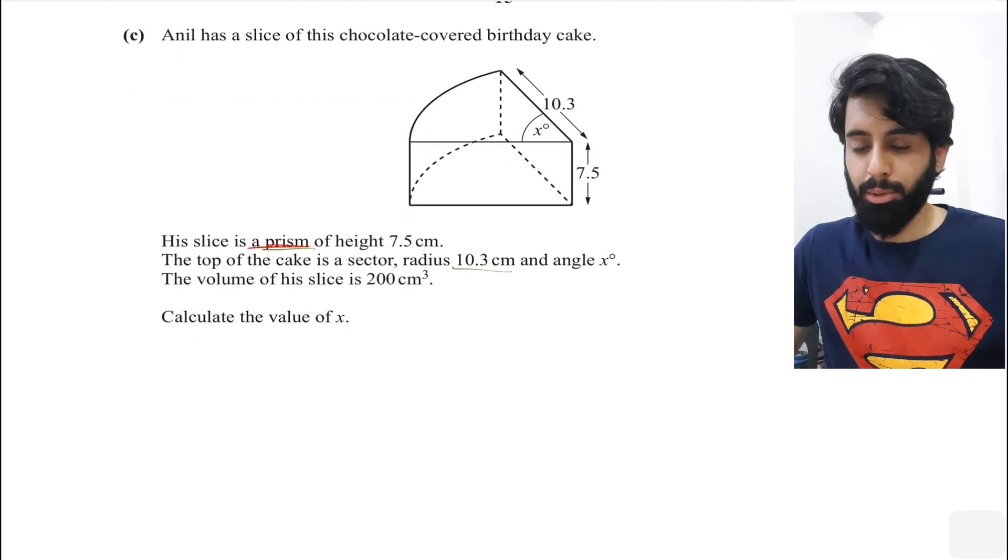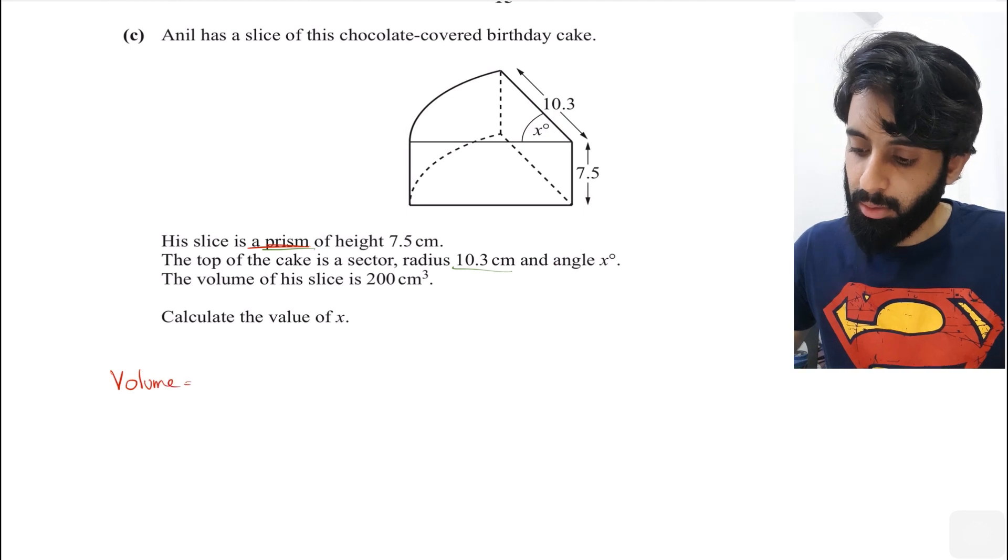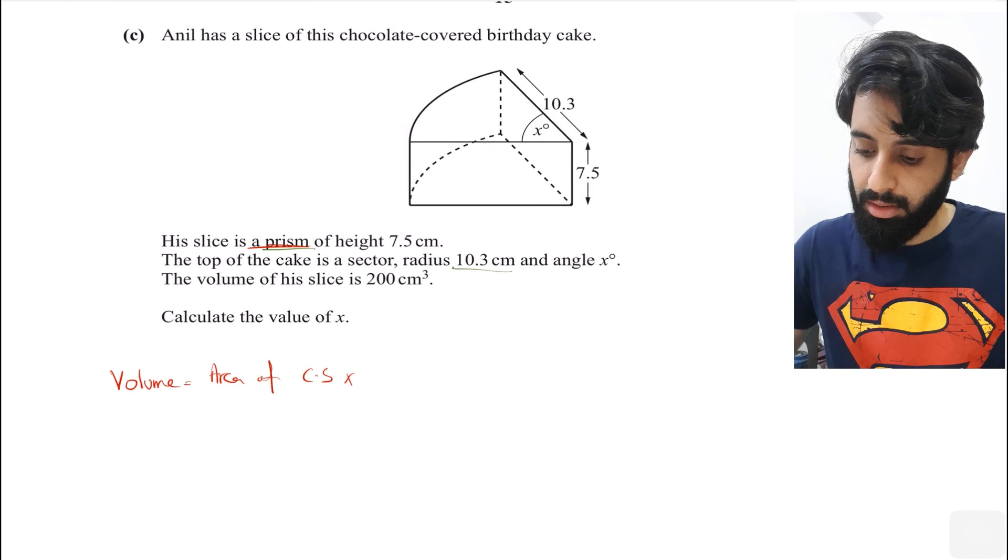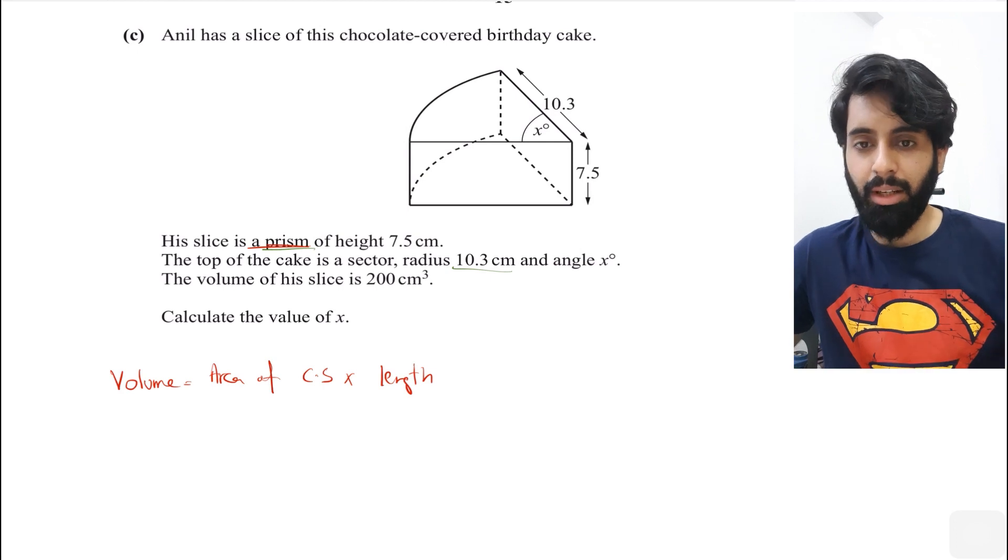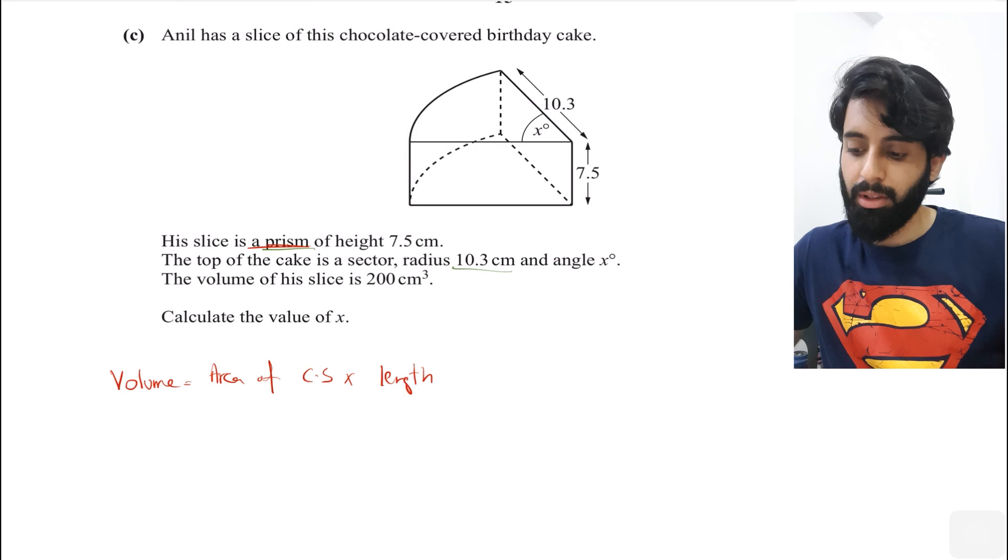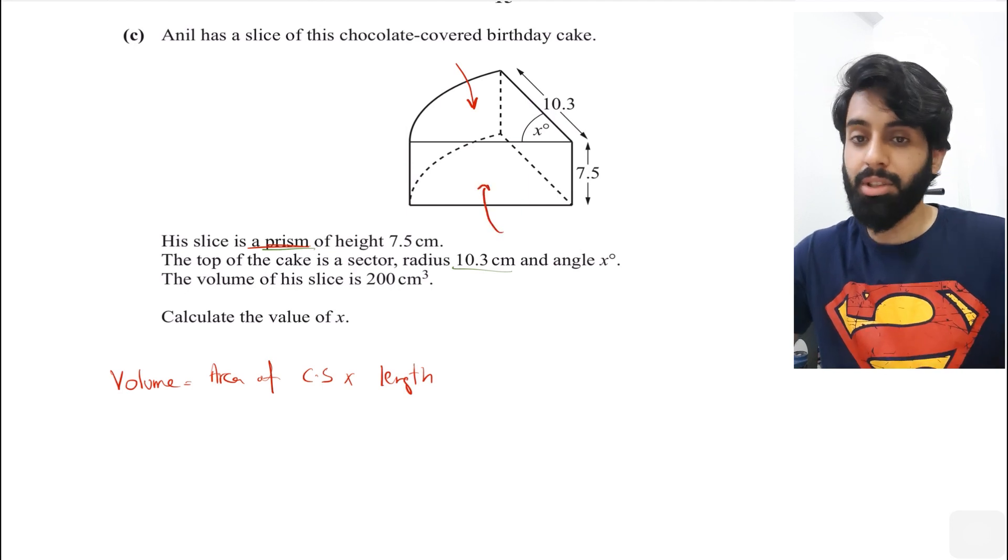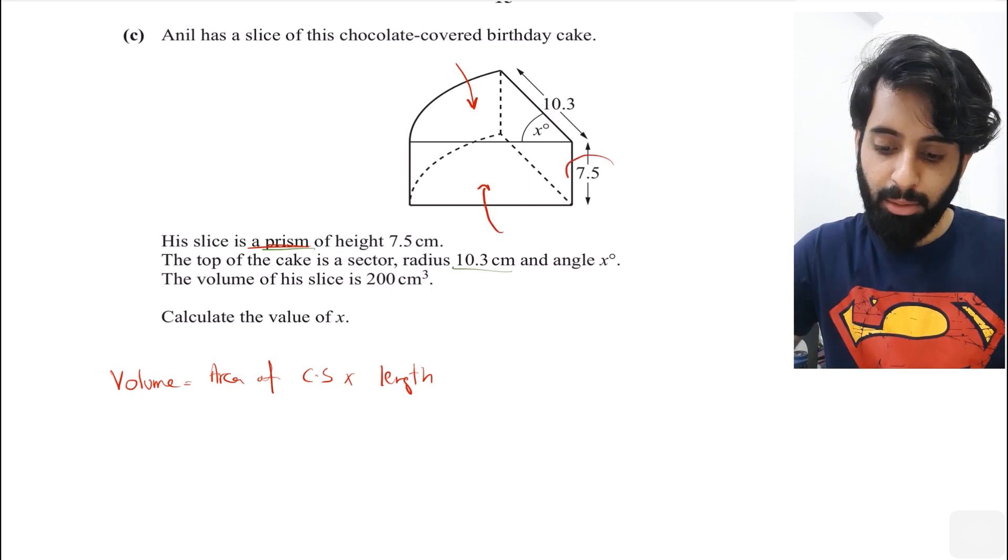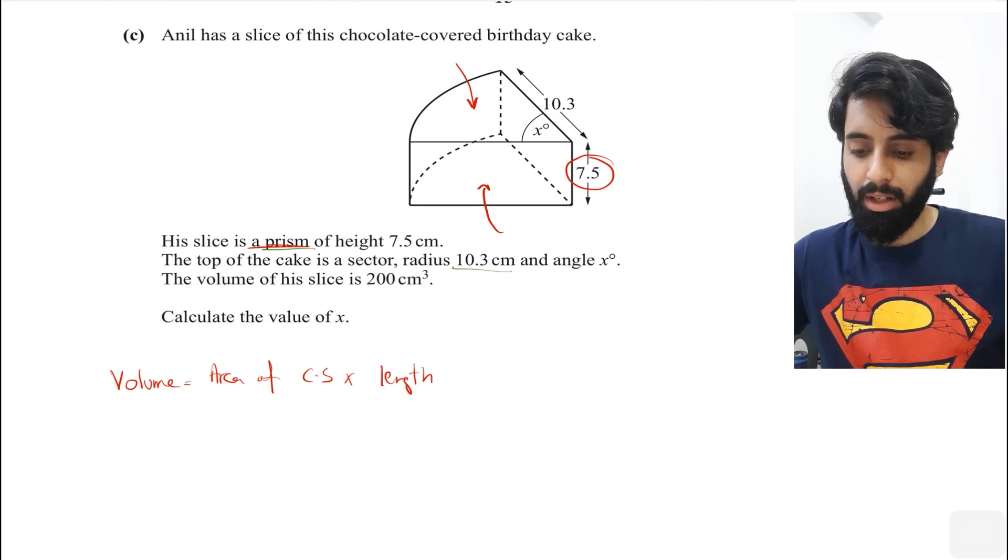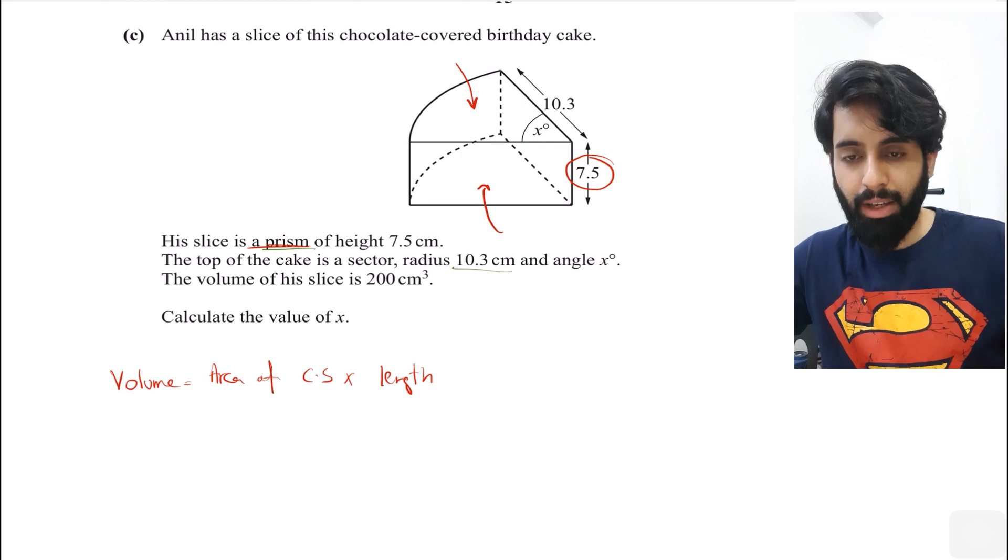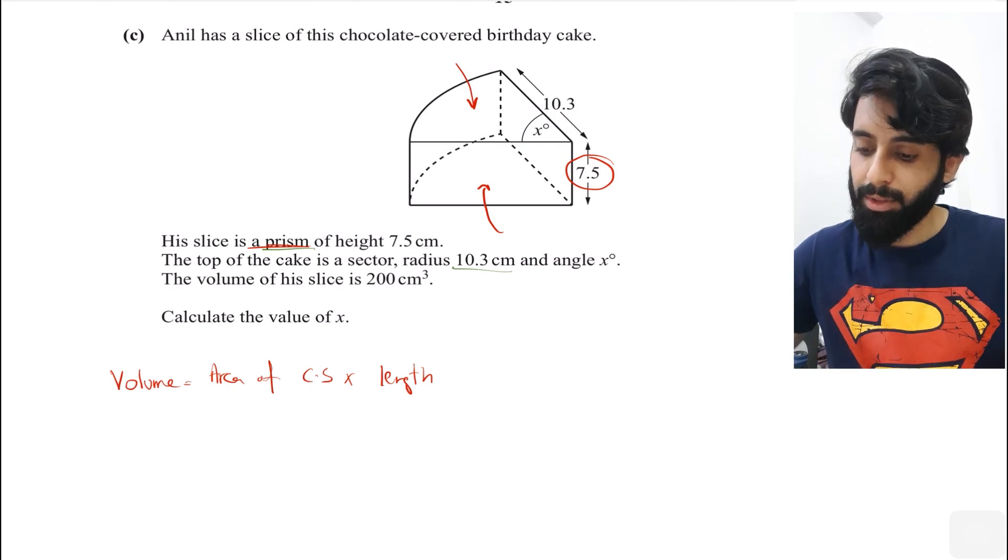The formula I always use for calculating the volume of a prism is: volume equals area of cross section times the length. Length is the perpendicular distance between the two identical surfaces. You can see that the cross section is a sector, so the two identical faces are sectors, and 7.5 is going to be the length of the prism. Length is the perpendicular distance across the two identical and parallel surfaces in a prism.